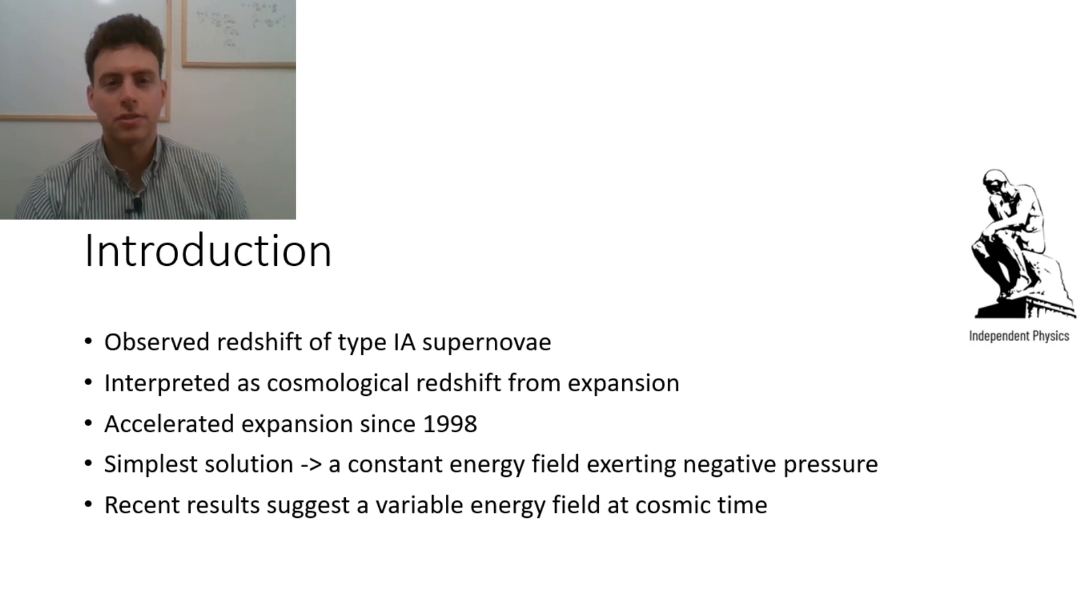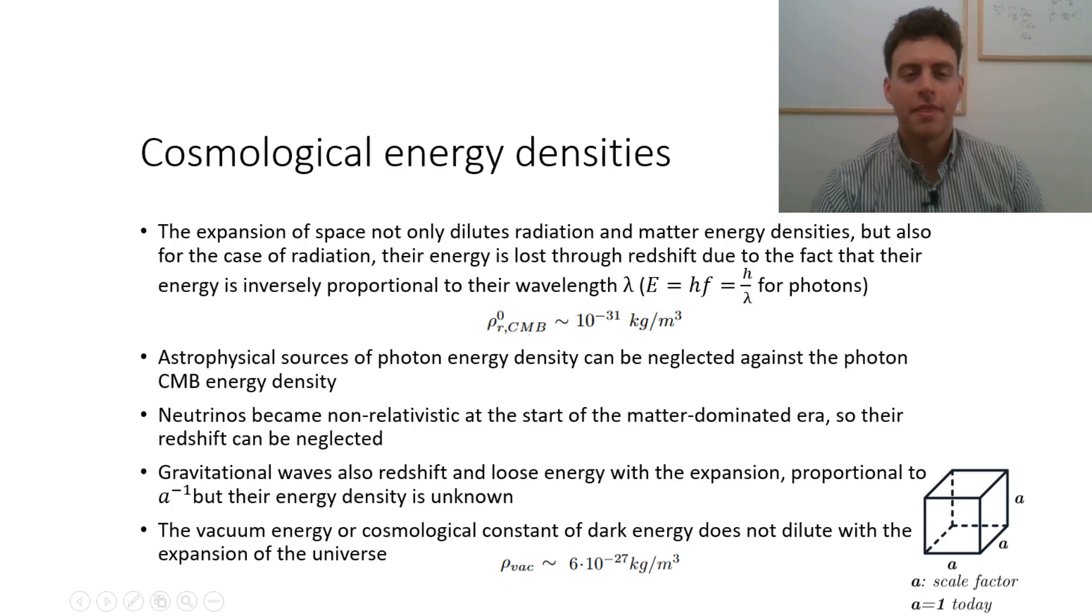Recent results suggest that the energy of this field is not constant along the universe. The expansion of the universe not only dilutes radiation and matter energy densities but also for the case of radiation such as photons, relativistic neutrinos, or gravitational waves, their energy is lost through redshift due to the fact that it is inversely proportional to their wavelength.